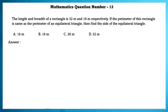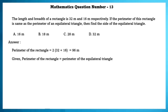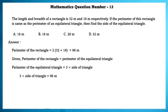Mathematics question number 13. The length and breadth of a rectangle are 32 meters and 16 meters respectively. If the perimeter of this rectangle is the same as the perimeter of an equilateral triangle, find the side of the equilateral triangle. Perimeter of the rectangle = 96 meters. Since perimeter of equilateral triangle = 3 × side, we get 3 × side = 96, so the side = 32 meters.